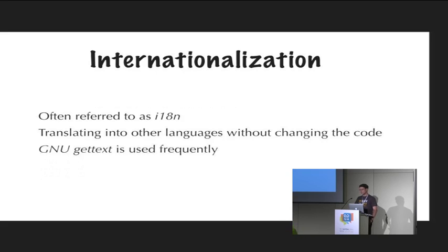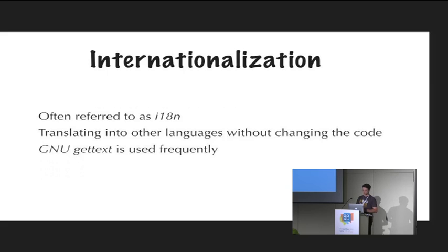The idea about I18N is that you can translate strings inside your software without having to change your software all the time. If you had all the different texts in different languages mixed into your regular code, this would really be a mess. You also need a transparent system to exchange the messages that people see when they use the software. The best-known tool for that is gettext, which is open-source software. This is also used in Sphinx to create the translations.